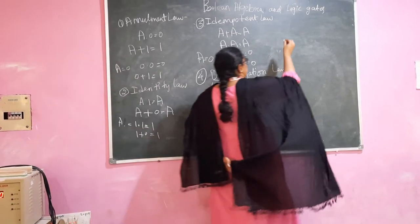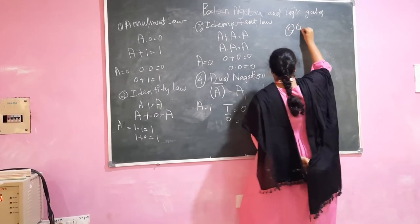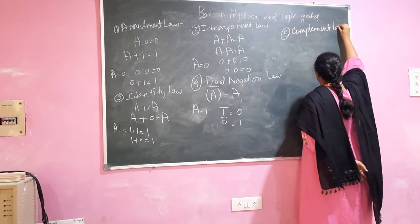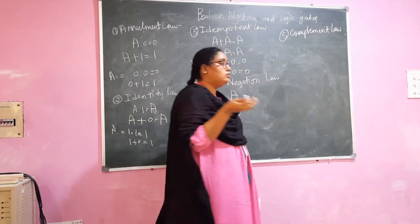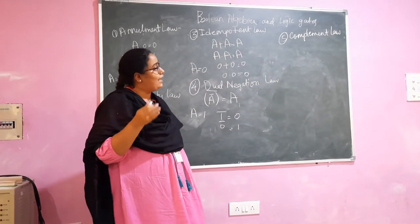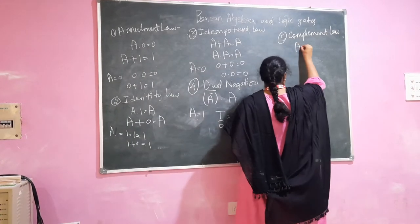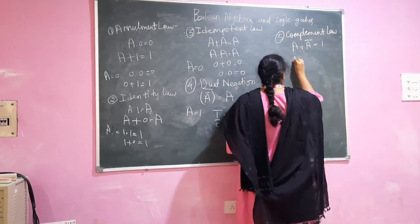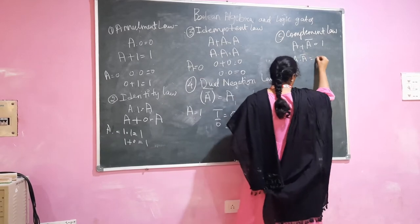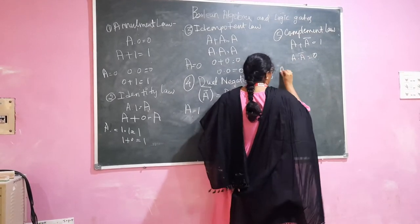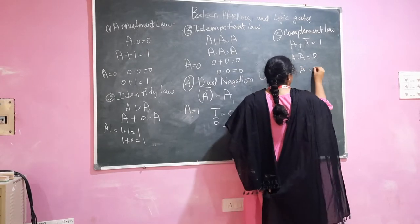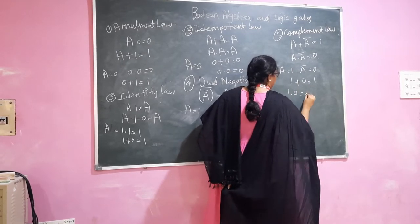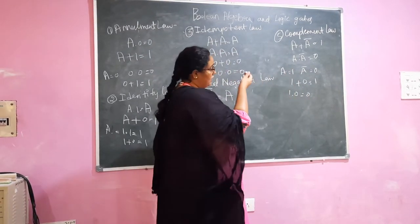Next we can see the complement law. This law states that when a variable is complemented and added — for example A plus A bar, where A bar is the complement of A — then we get 1. And if a variable is AND'd with its complement, we get 0. If A is equal to 1 then A bar is equal to 0, so 1 plus 0 would be 1, and 1 AND 0 would be 0.